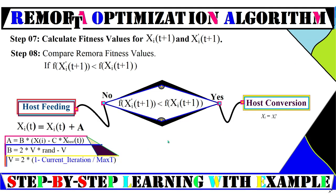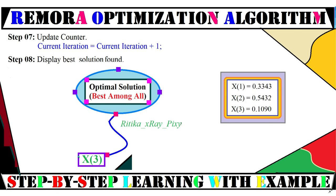After that, we calculate the fitness values for the updated solution using the fitness function and compare the new solution with the older one. If the new solution is better, we perform host conversion — also called host feeding — using the corresponding mathematical equation. We then increment the counter and check the stopping criteria. If matched, we display the solution. For example, with three remora, the best solution is displayed. That's all about this video — if you have any questions, comment below and thanks for watching.